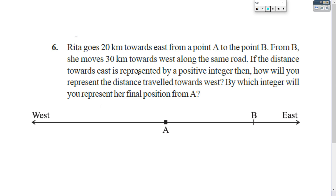Here is question number 6. Rita goes 20 km towards east from a point A to the point B. From A to B it is 20 km. From B, she moves 30 km towards west along the same road. If the distance towards east is represented by positive integer, from A to B it is positive integer. How will you represent the distance traveled towards west?